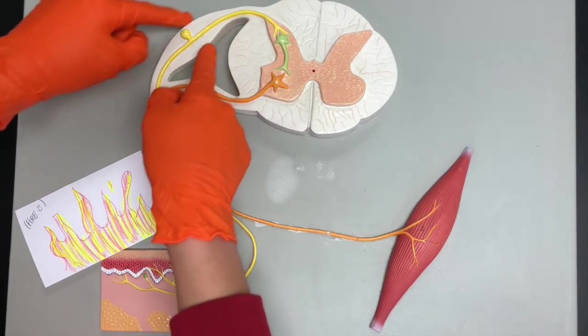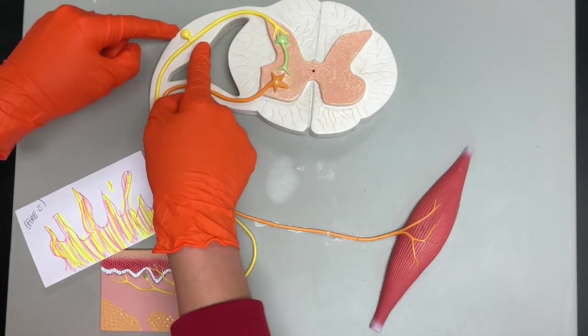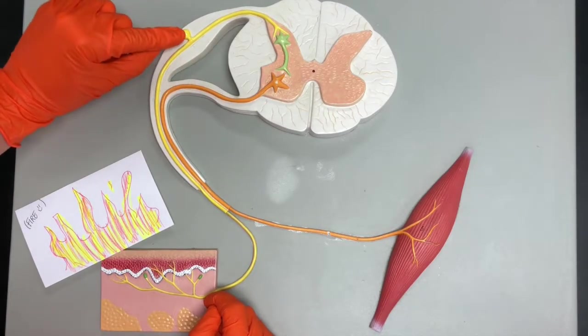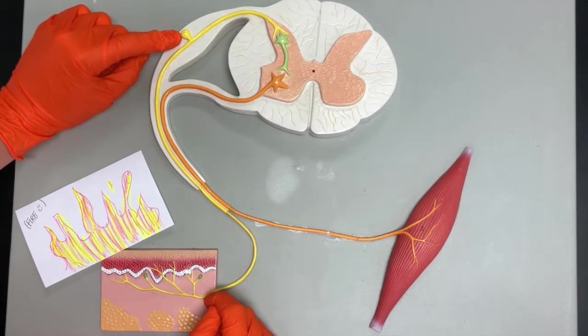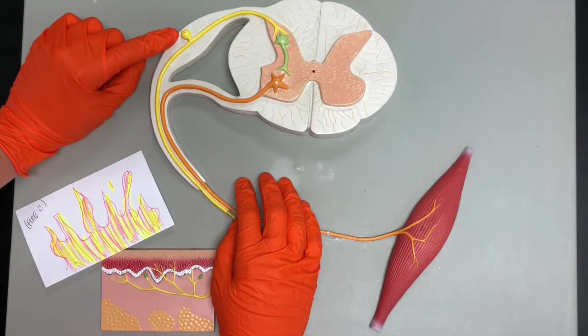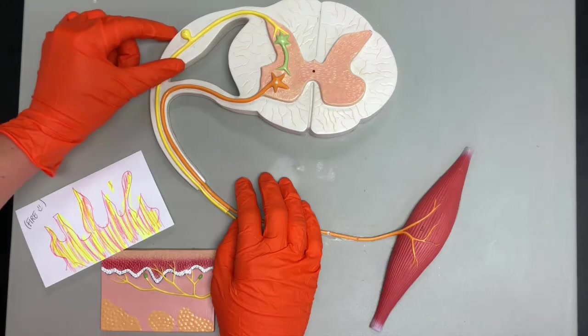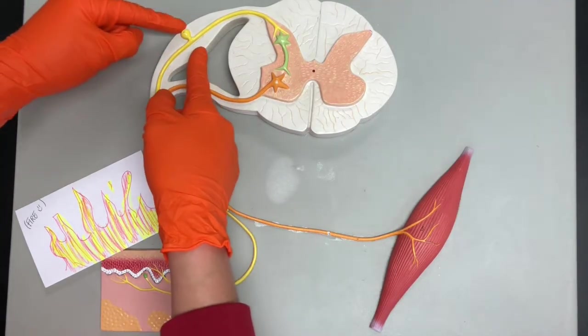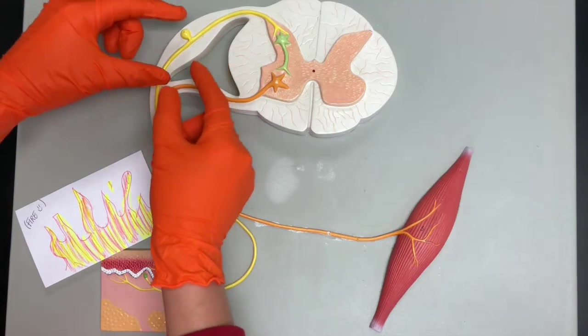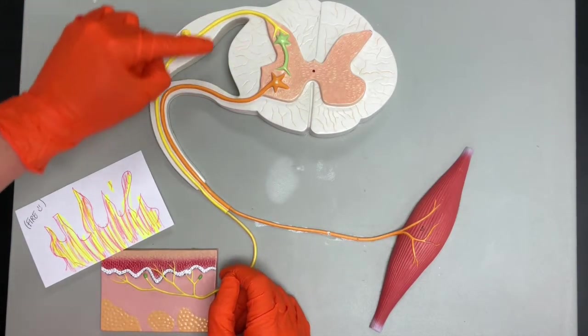Why is this bulged right here? It's bulging because this contains all the cell bodies of the unipolar neurons. Do you remember what that term was called from another video? Hopefully you're thinking posterior or dorsal root ganglion.